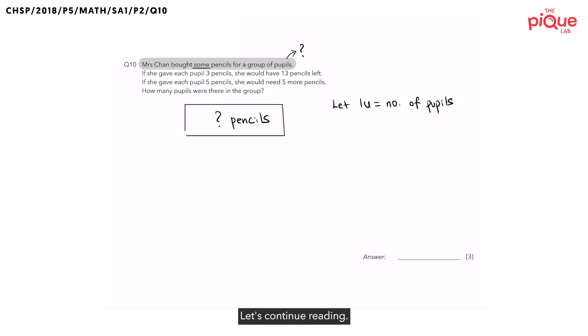Let's continue reading. If she gave each pupil three pencils, she will have thirteen pencils left. If she gave each pupil five pencils, she will need five more pencils. In these two sentences, we see the word if. Let's zoom in to each of these if sentences.